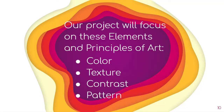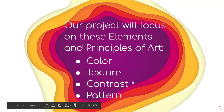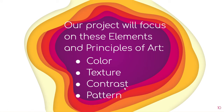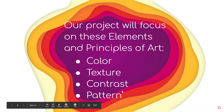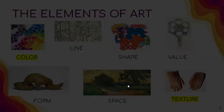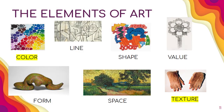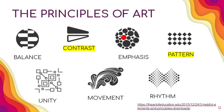Our project is going to be focusing on these elements and principles of art. We're going to be thinking about color — weaving definitely creates a lot of soft texture. The colors we're using are going to be across the color wheel: complementary colors that create contrast, and you may decide to weave them in a pattern. You can see those here — color, texture, contrast, and pattern.